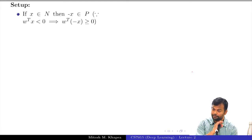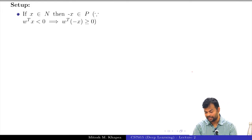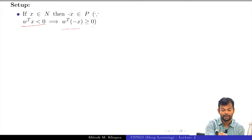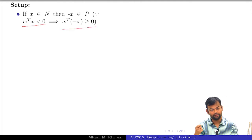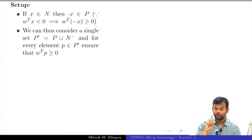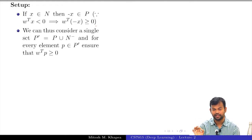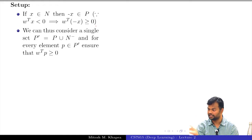The first thing I am going to say is that if a point belongs in the negative set, then the negative of that point belongs in the positive set. That is very clear, because if the point belongs in the negative set, then W transpose X is less than 0, but W transpose of minus X would be greater than or equal to 0. So I take the negative of the point and put it in the positive set. Instead of considering two different things P and N, I am just going to consider one P prime, which is a union of P and all the N points negated.